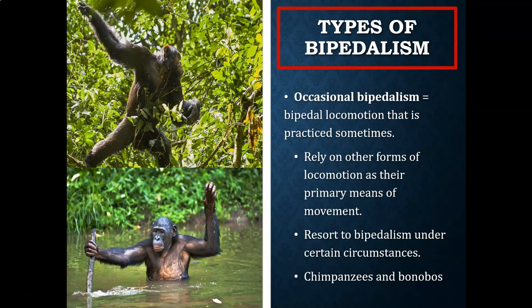Occasional bipedalism is bipedal locomotion that is practiced sometimes. Occasional bipeds rely on other forms of locomotion as their primary modes of movement and resort to bipedalism under certain circumstances. Good examples are modern-day chimpanzees and bonobos, which are predominantly knuckle walkers and brachiators. Both have been observed being bipedal when standing on branches to reach higher hanging fruit, walking through water using a stick as a tool, carrying food, using tools, or carrying infants.